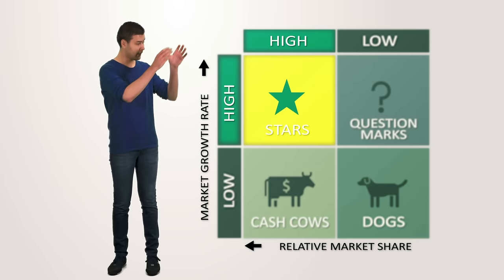Business units in a slow growth or declining market with a small relative market share are considered dogs. These units typically break even, they neither create nor consume a large amount of cash, and generate barely enough cash to maintain the business market share. These businesses are therefore not so interesting for corporations. Since there is still money involved in these business units that could be used in units with more potential, dogs are likely to be divested or liquidated.